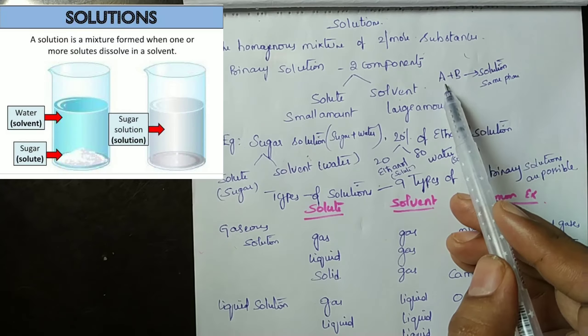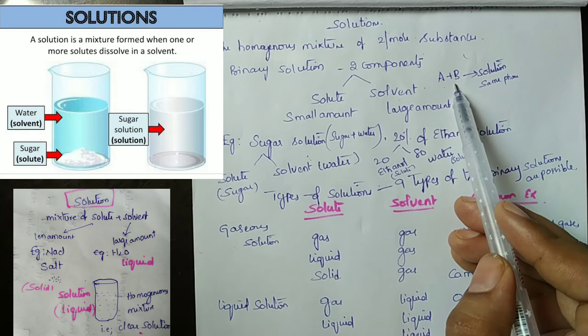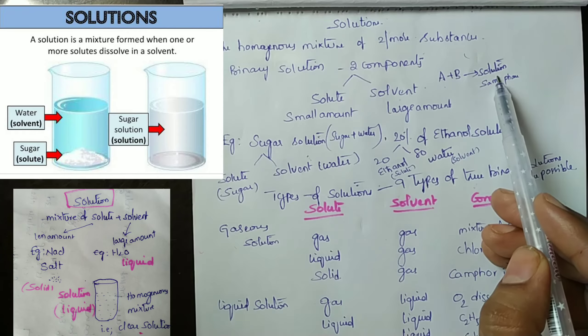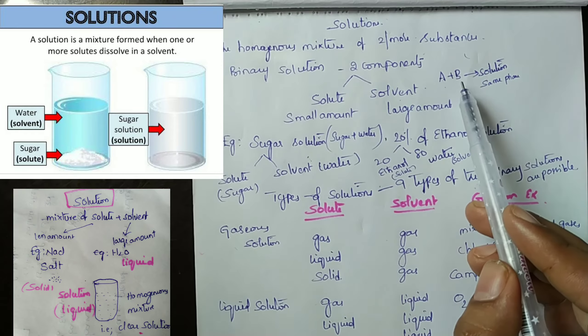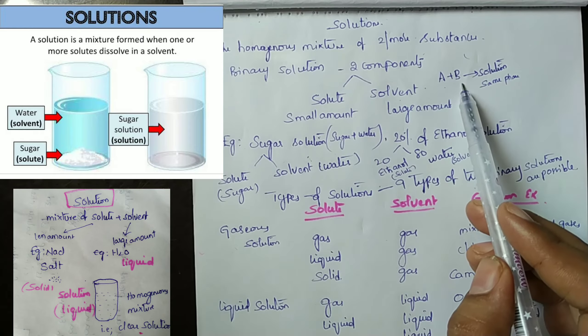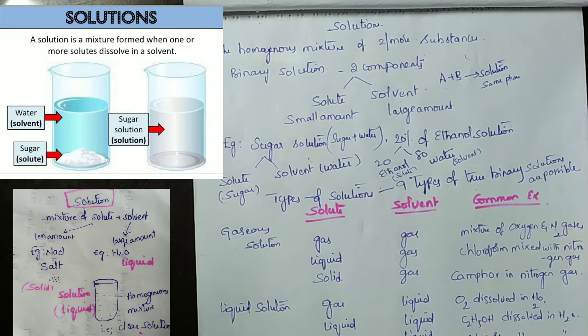The homogeneous mixture of two or more substances is called a solution. In a solution, solute and solvent are in the same phase.